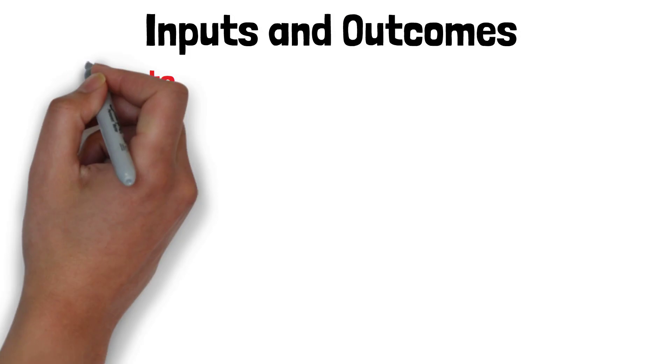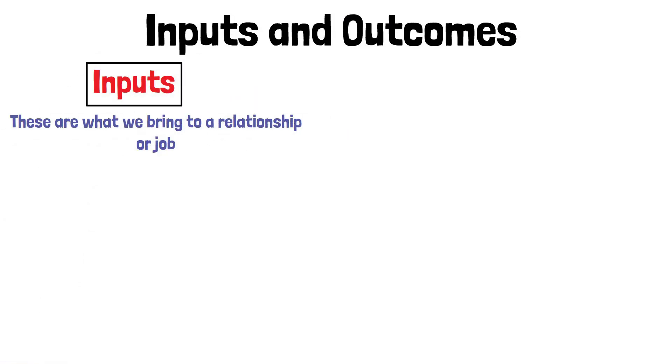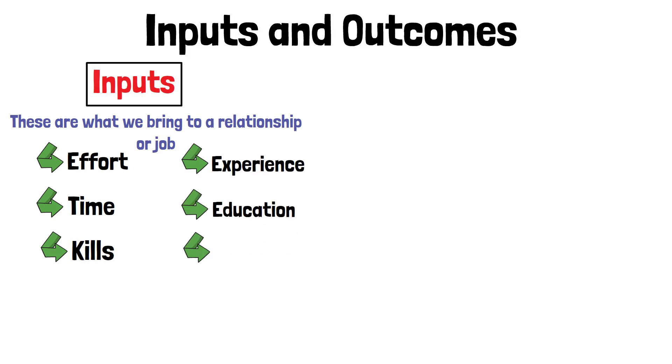Let's look a little deeper at inputs and outcomes. First is inputs. These are what we bring to a relationship or job. These can include effort, time, skills, experience, education, and loyalty.